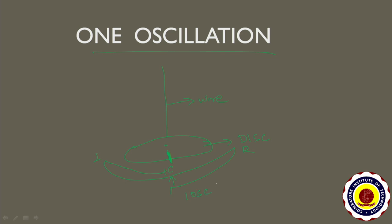So one oscillation is: if you oscillate the pendulum, the point of consideration reaches the left extreme, goes to the right extreme, and again comes to the center. That is called one oscillation.